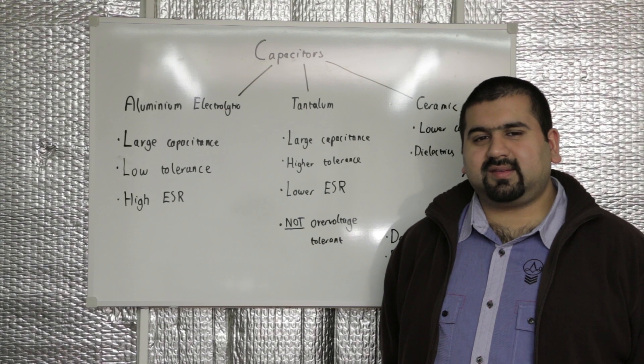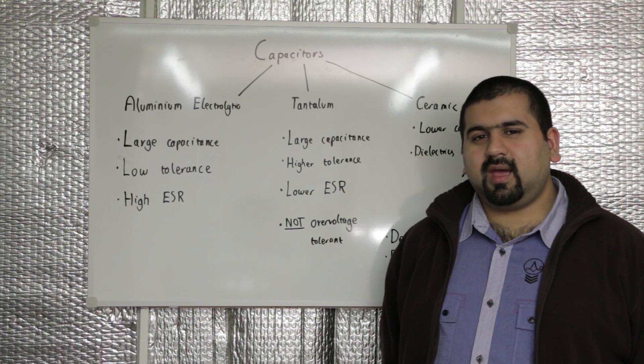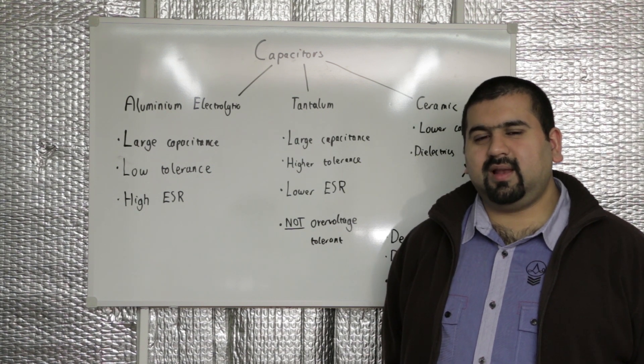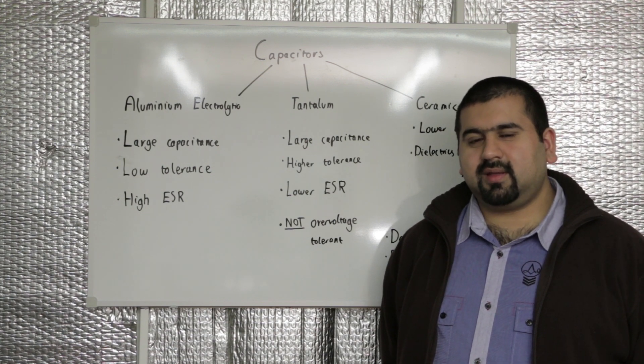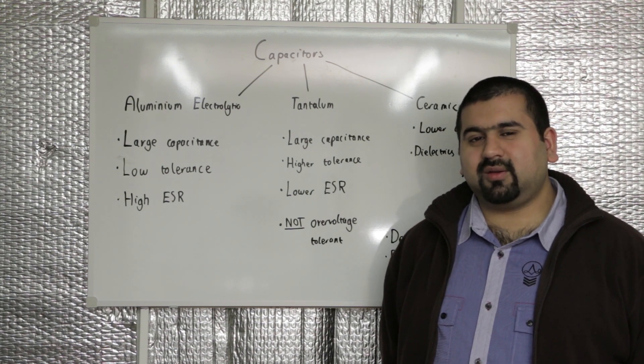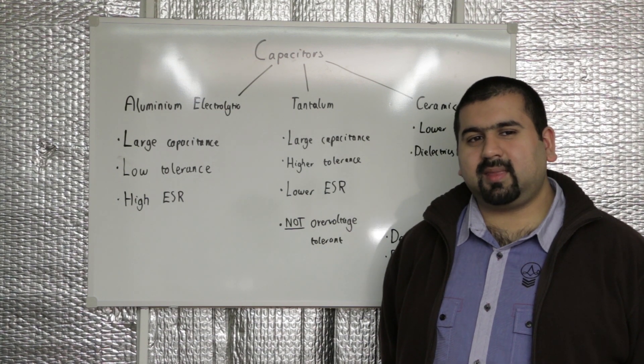Tantalum capacitors have a larger capacitance relative to their size. They have a higher tolerance compared to electrolytic capacitors. They have a low ESR, but are not over voltage tolerant. Therefore, you should use a capacitor with a voltage rating higher than calculated.